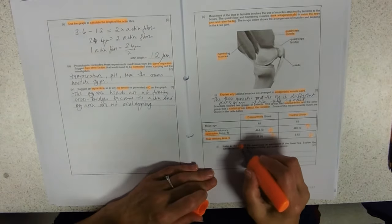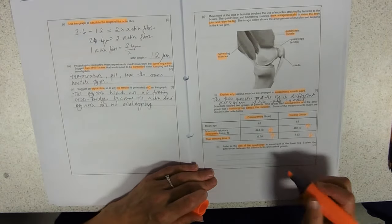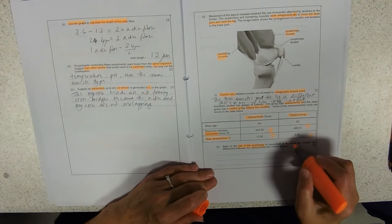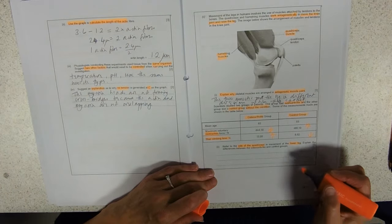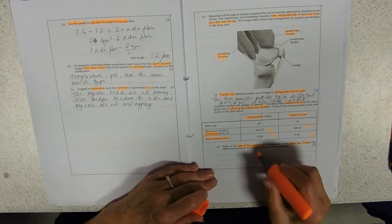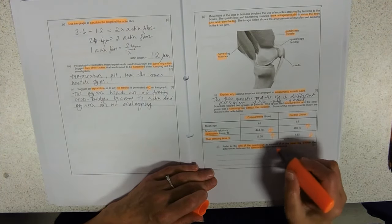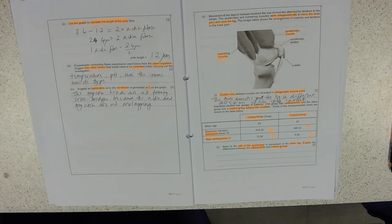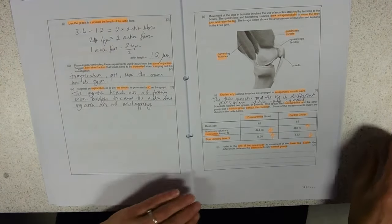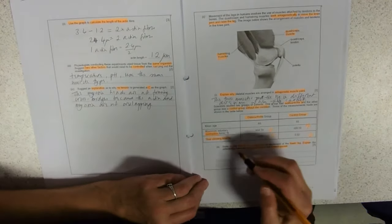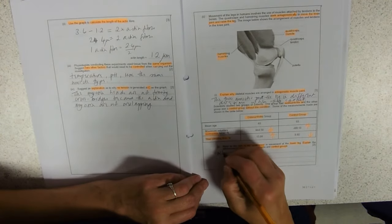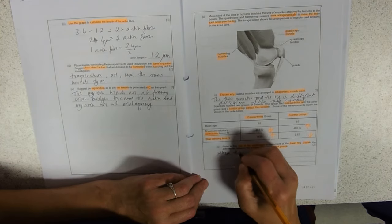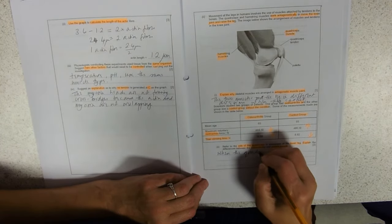Refer to the role of the quadriceps. We need to say what it does in the movement of the lower leg. Explain the differences between the osteoarthritis and control groups. So when we're referring to the role of the muscle, we need to say what it does.